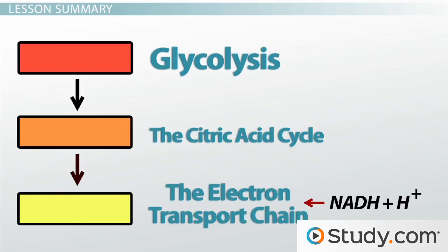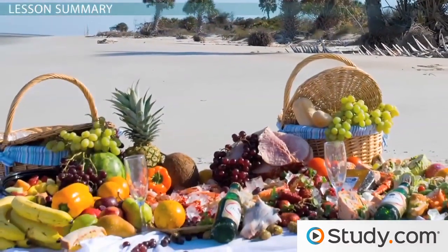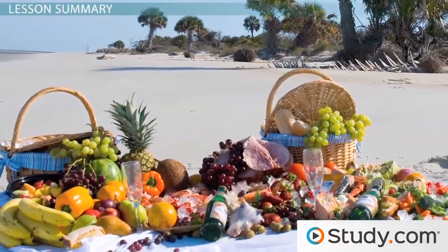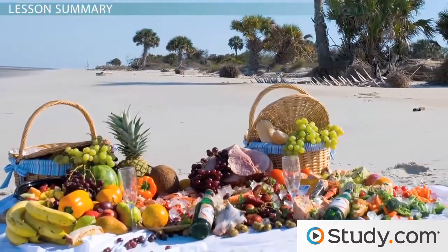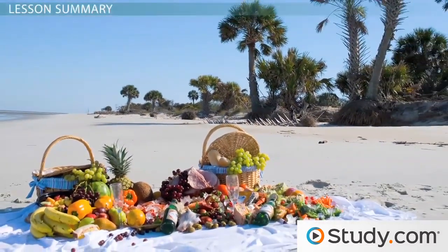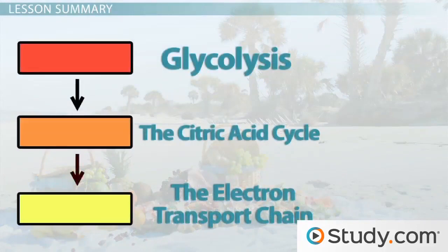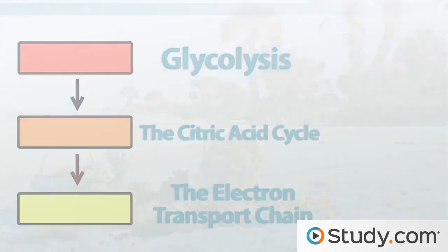At this point, we've taken the first step to using the food from our picnic and turning it into chemical energy. In the next two stages of this process, we'll see how we can use oxygen and electron carriers to create even more ATP to energize our cells.